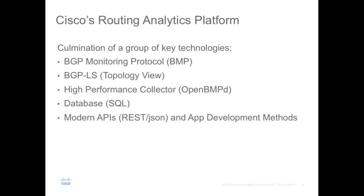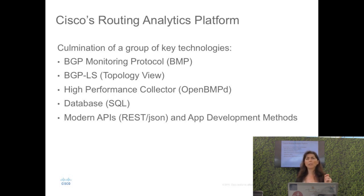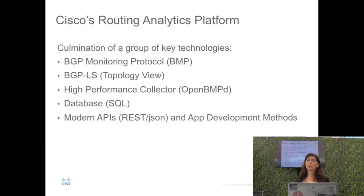Cisco's routing analytics platform is a combination of key technologies. The question is: why hasn't routing analytics taken precedence in the industry yet? The reason is that key technologies had to come together. The first is BGP Monitoring Protocol, which allows us to collect data from the network in a scalable and efficient way. One-to-one BGP peering to collect routing data doesn't scale, and it's very intrusive because you're asking network operators to touch the routers. BMP is designed specifically to allow streaming of BGP data in a one-to-many fashion from the network.